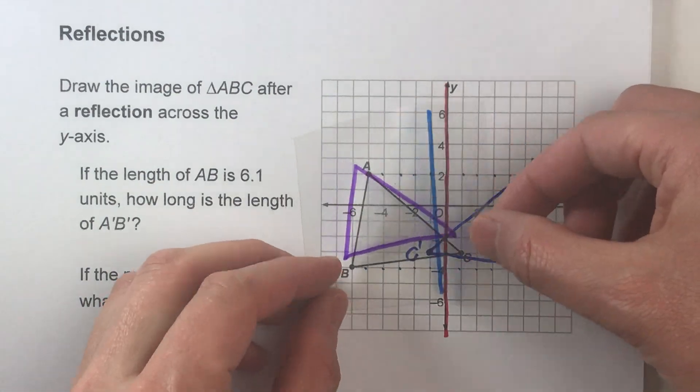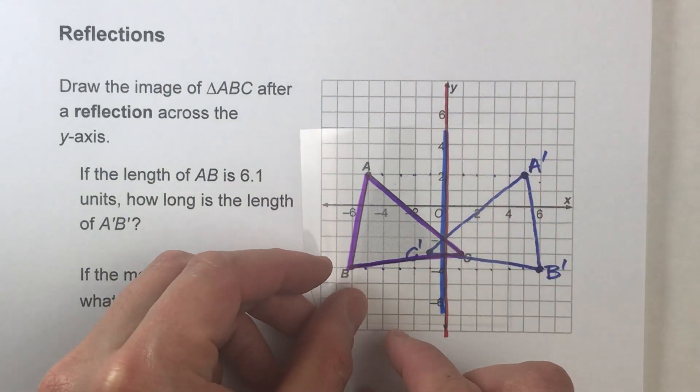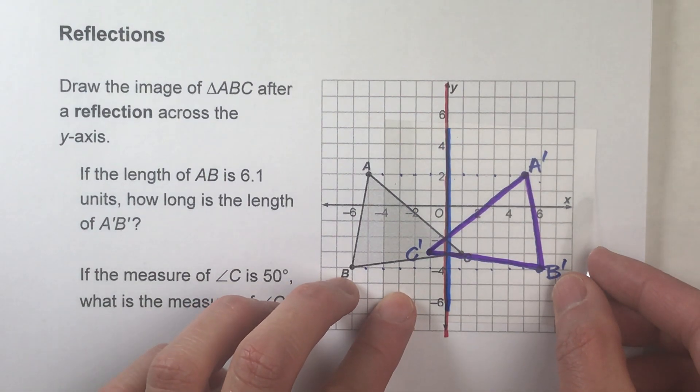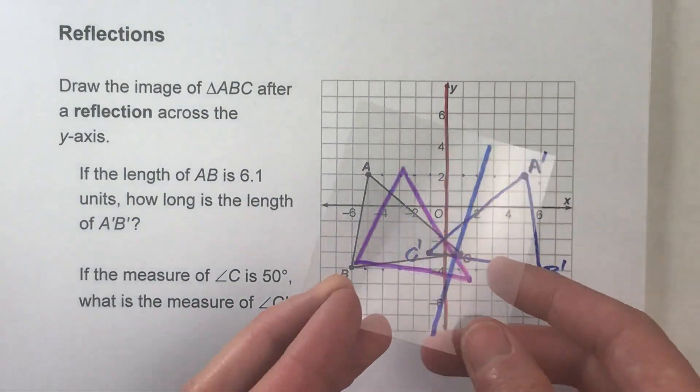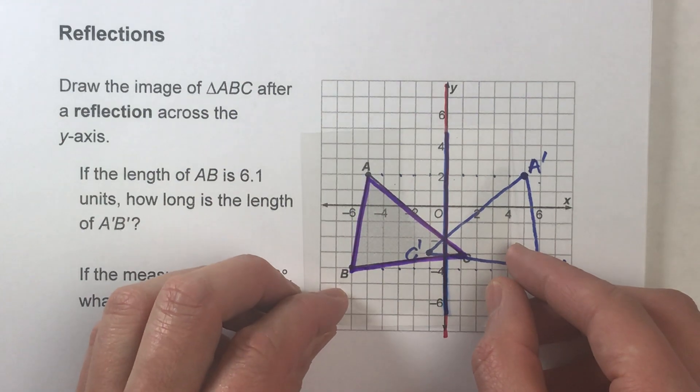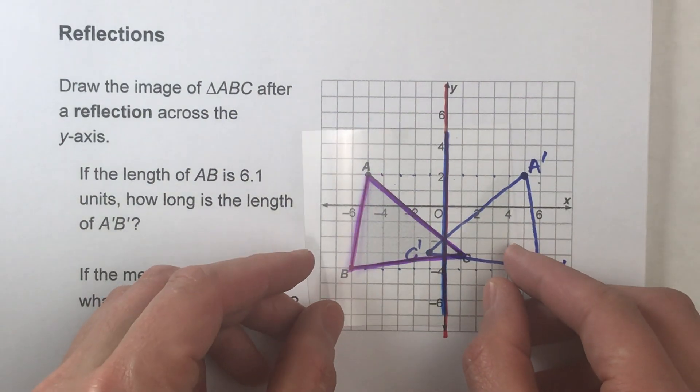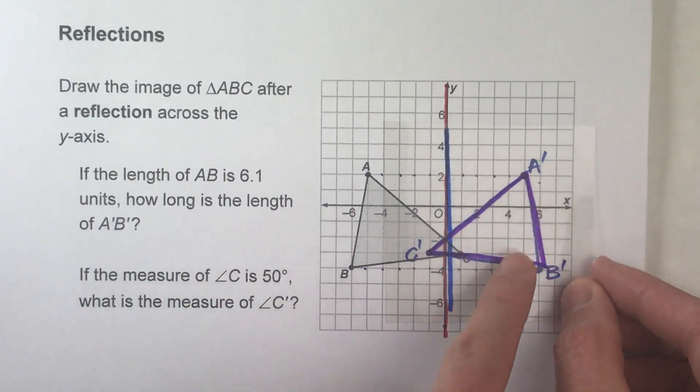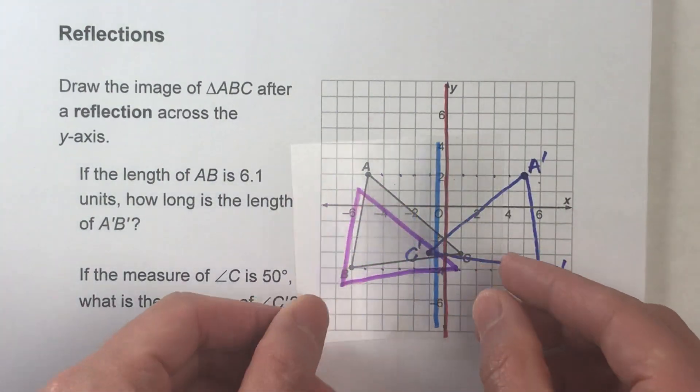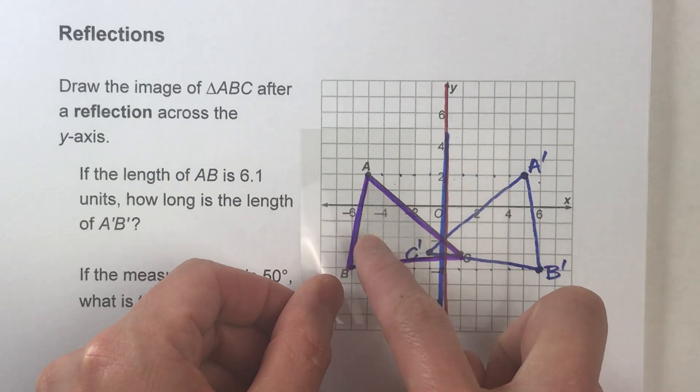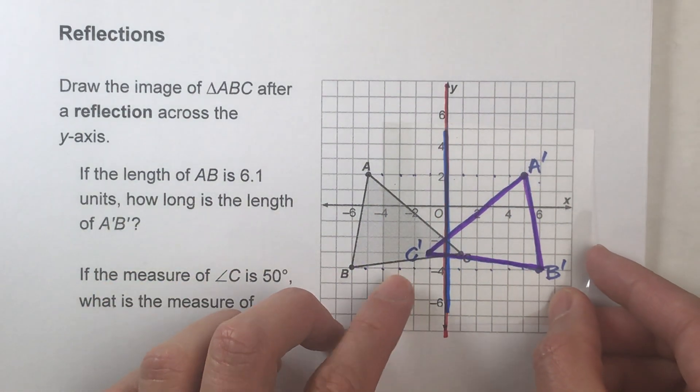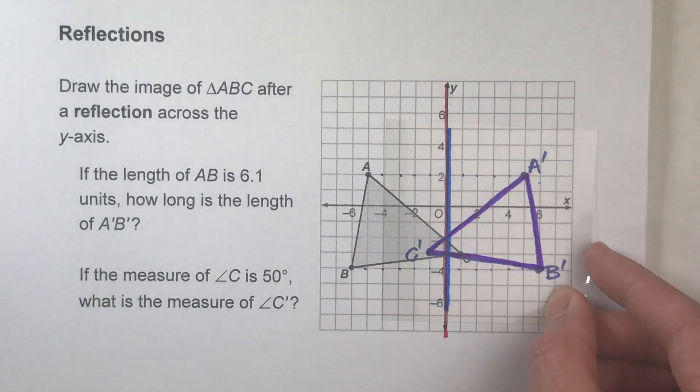So notice, the original triangle and the reflected triangle are the exact same size and shape, it's just oriented in reverse. In other words, it's the mirror image of it. But notice, the side lengths of this new triangle is the same as the side lengths of the original triangle, and the angles of all the original triangle's angle measures are all the same as the new triangle's angle measures.